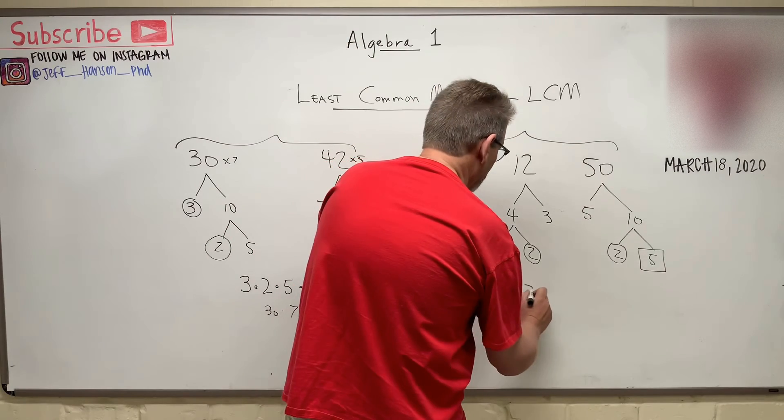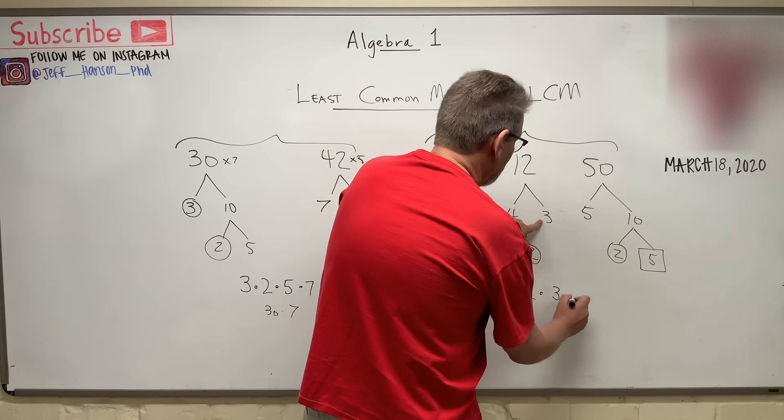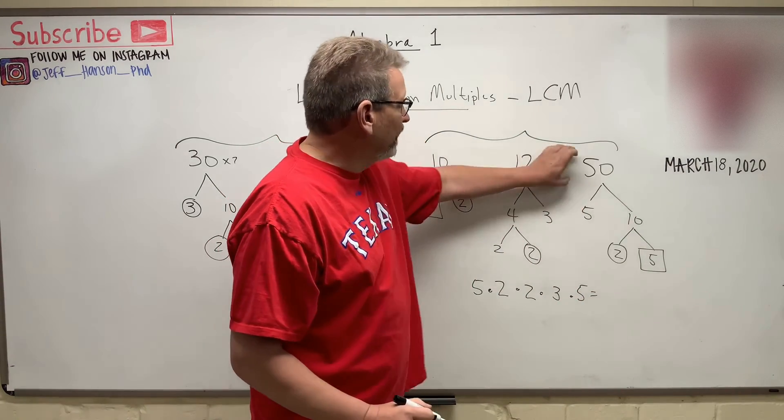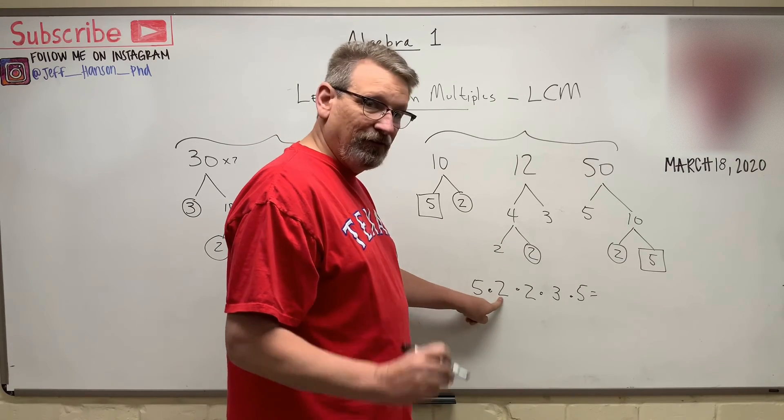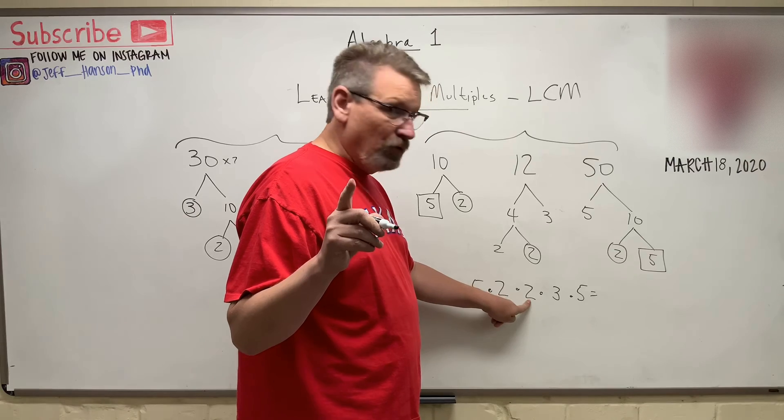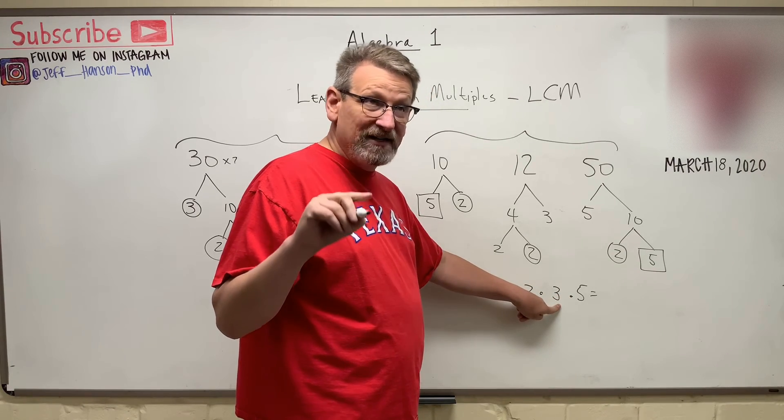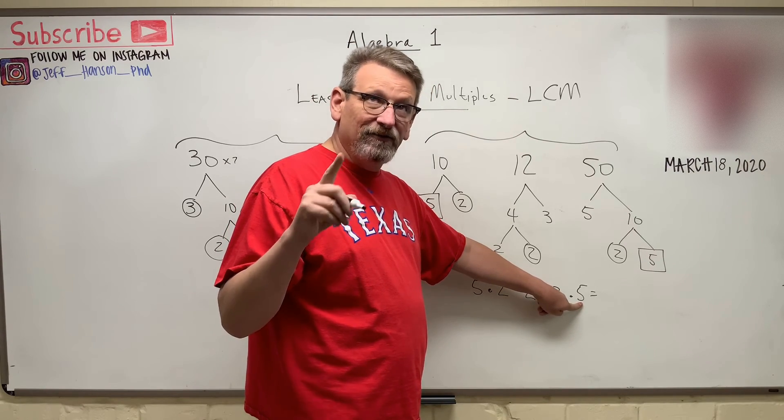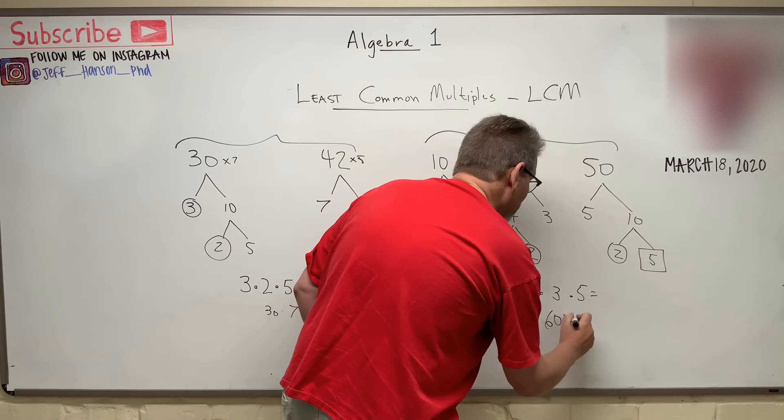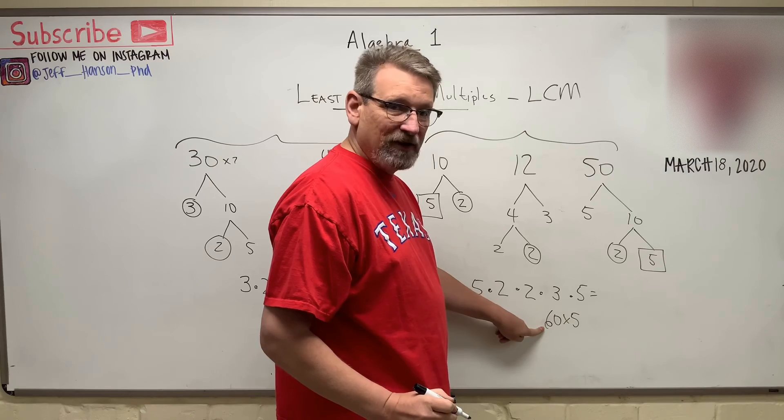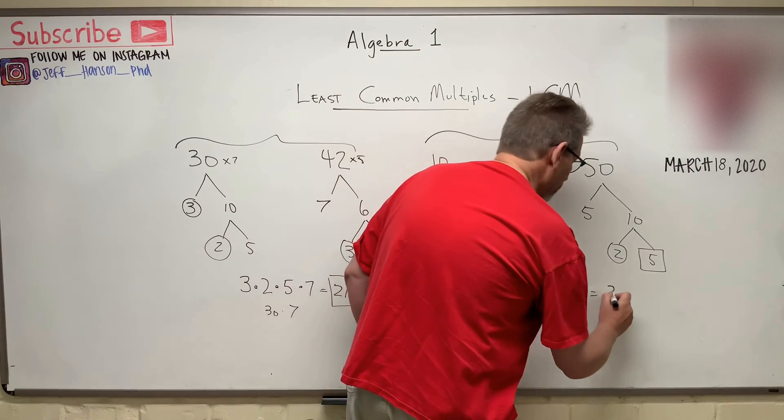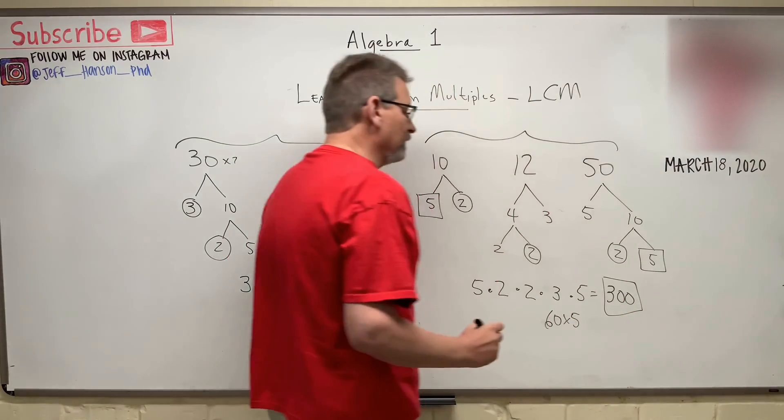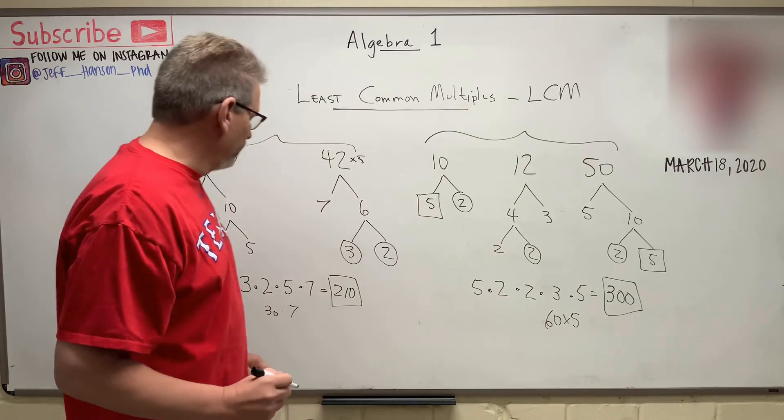And so the least common multiple for 10, 12, and 50 is 5 times 2 is 10, times 2 is 20, times 3, 20 times 3, 20, 40, 60. And then 60 times 5, remember, 60 times 5, what's 5 times 6? That's 30. Put another 0 on it. So it's 300. And so 300 is our least common multiple for that set of numbers.